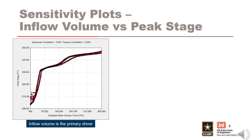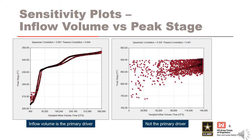The first sensitivity plot available in the drop-down menu shows the correlation between inflow volume and peak stage. The plot on the left is an example for a dam with a relatively high correlation, which suggests that the inflow volume is a primary driver of peak stage — higher inflow volumes produce higher peak stages. In the plot on the right, results for a different dam are shown where the correlation is relatively low, which suggests that the inflow volume is not the primary driver of peak stages — larger inflow volumes do not necessarily produce higher peak stages for this dam.